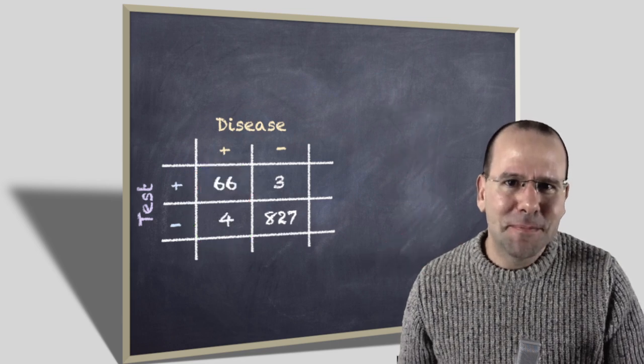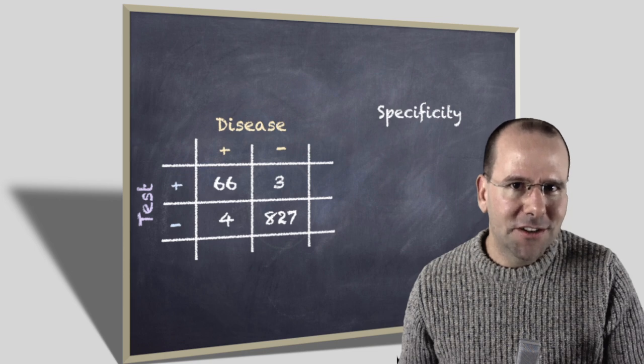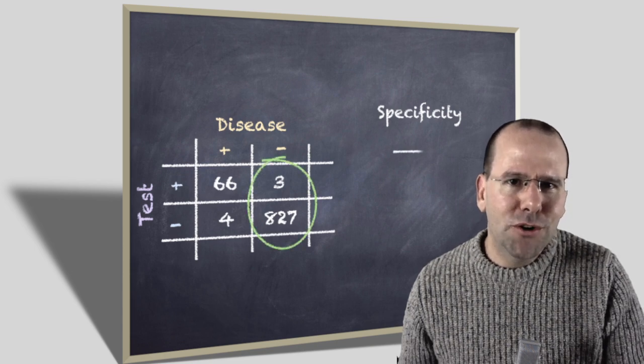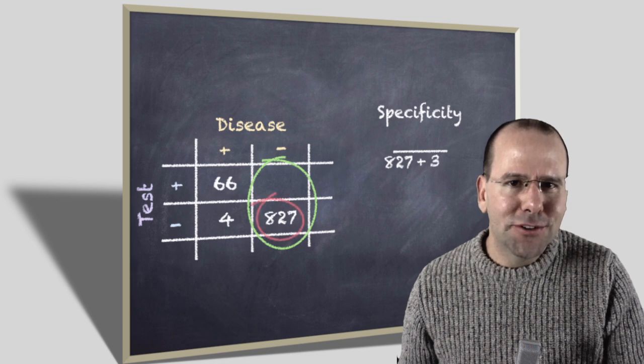The next thing we're going to talk about is specificity. We're interested in the population of people who are actually negative. Those are the ones that are encircled in green. And we want to know what proportion of those people test negative, those that are encircled in red.